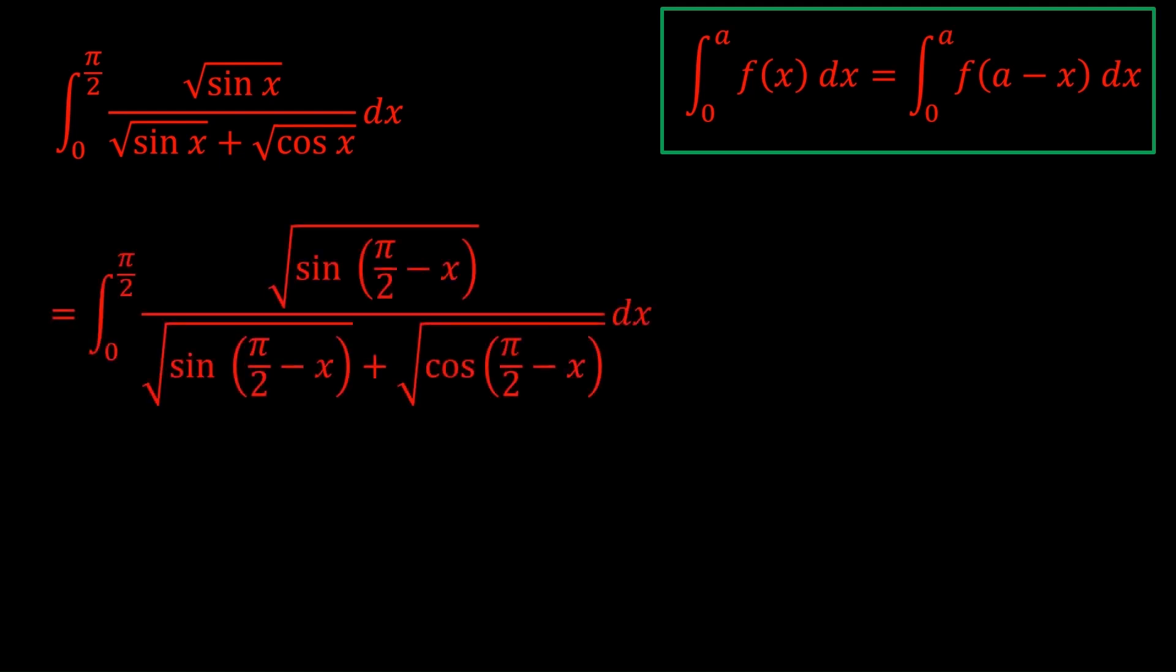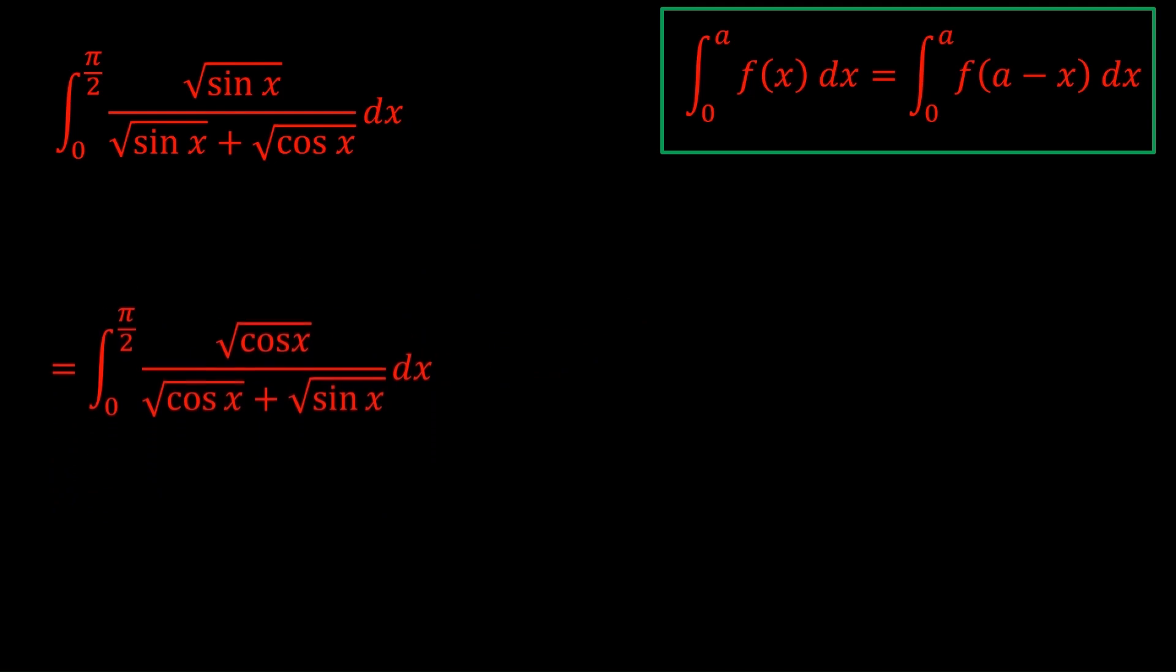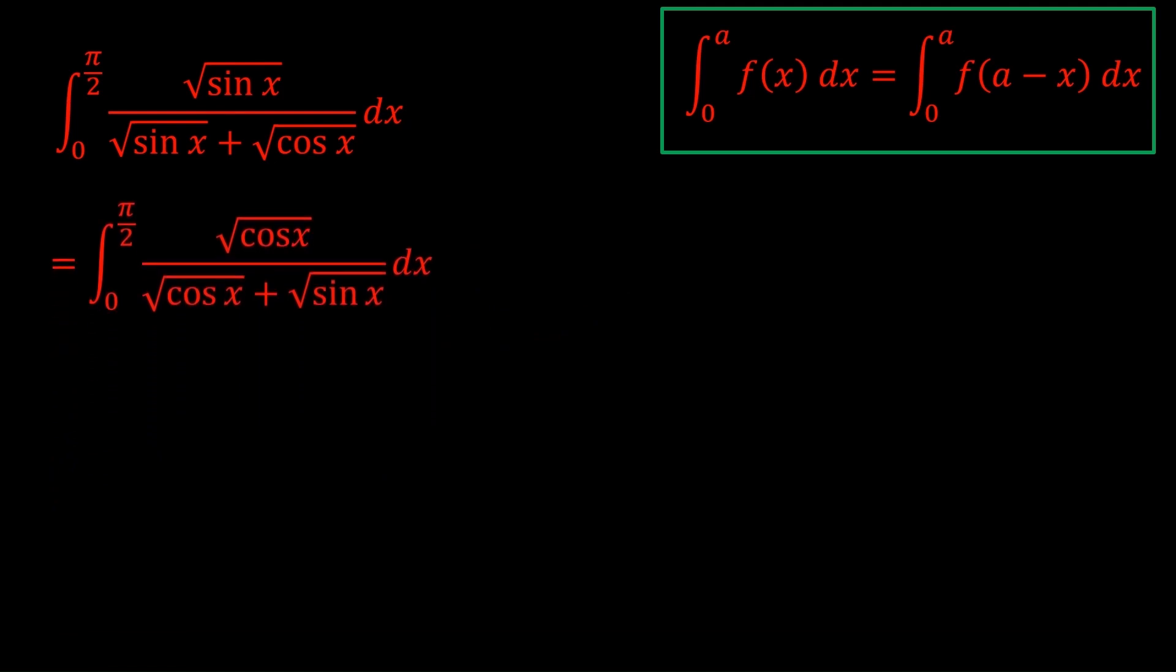And that will turn the sines to cosines and the cosines to sines. To be honest, you should be able to skip the first step here. Okay, so what do we do now? Well, we have two different forms of the same integral. So that integral is just half of the sum of these forms, using the first trick.